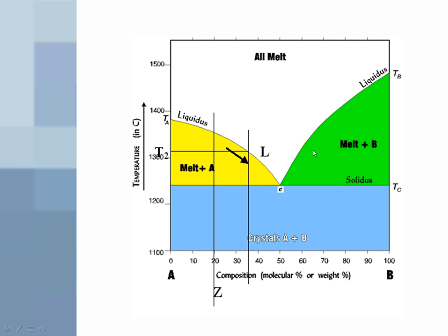When you get to the eutectic, for the first time, you can get crystals of B. The crystals of B and the crystals of A will form at the same rate. The reason is that this particular eutectic is right over the 50% mark. In other words, the melt at this point is 50% A and 50% B. So you're going to get your crystals forming in a one-to-one ratio.